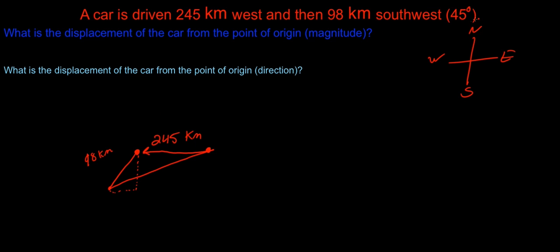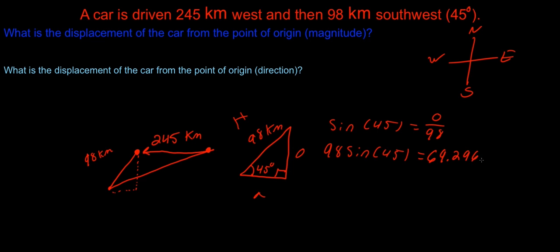Remember 45 degrees southwest - we have this 45-45 triangle. So let me draw this triangle bigger. We have a 98 kilometer hypotenuse at 45 degrees. To find our opposite side we can use sine. So sine of 45 equals our opposite over 98 because that's our hypotenuse. 98 sine of 45 equals 69.296.